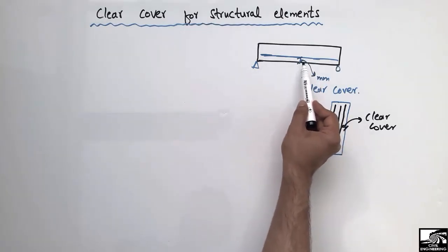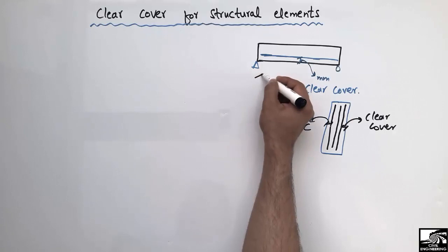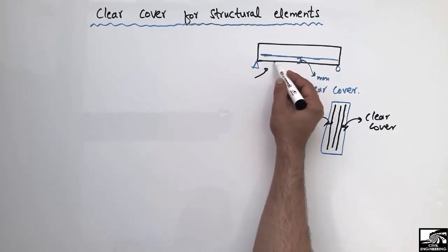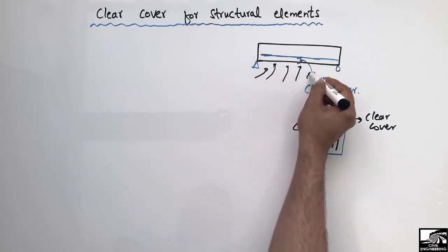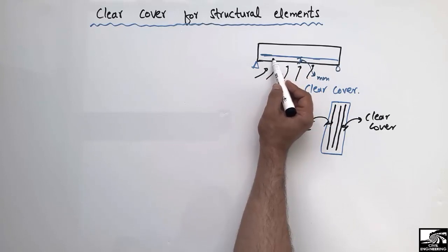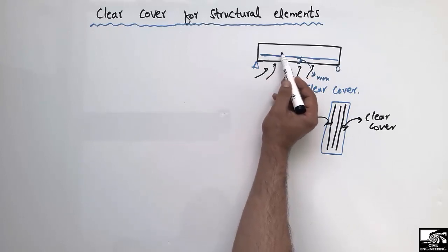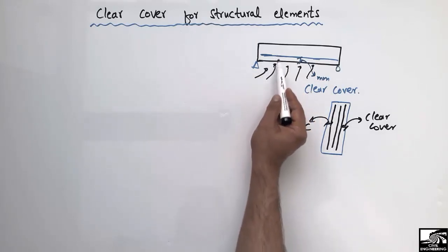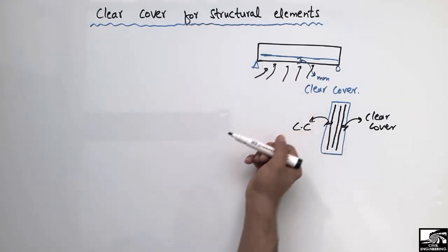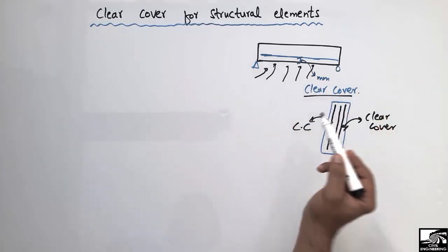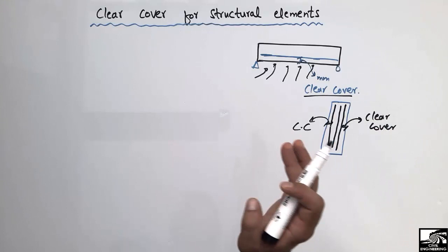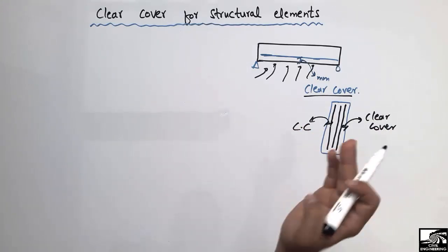We provide this clear cover to avoid corrosion of the reinforcement. Otherwise, if small cracks develop in the beam over time, water will penetrate into the beam and start the corrosion process within the reinforcement. To avoid this, we provide some distance from the bottom of the beam to the reinforcement, known as the clear cover. It is provided in every structural member — beam, column, slab, staircase, or footing.